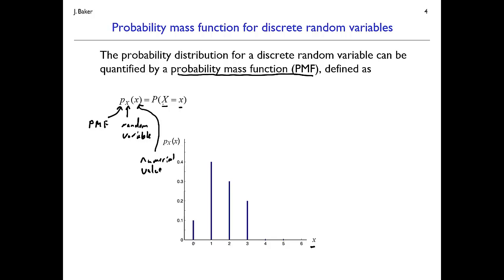In the figure, the x-axis lists values that the random variable could take — 0, 1, 2, 3 have spikes associated with them. The height of those spikes indicates the probability mass function. We can see the probability that X equals 0 is 0.1, the probability X equals 1 is 0.4, and so on. This graphic view lets us quickly see which values x can take and which values are more or less likely.